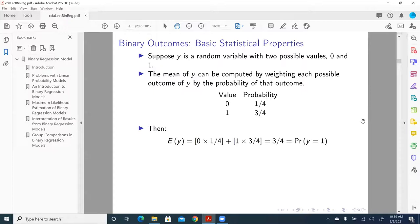Then, the expectation, or using layperson's term, the mean of y is equal to what? The value of y, one of the values of y, multiplied by its corresponding probability, one fourth. And the same thing for the second value of y, 1, multiplied by its corresponding probability, three quarters. And what we got? We got three quarters.